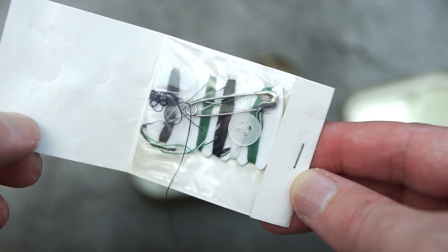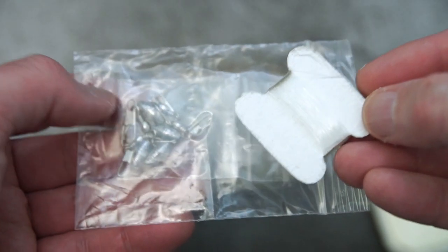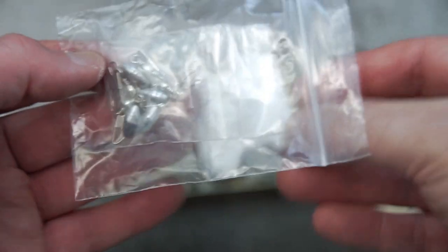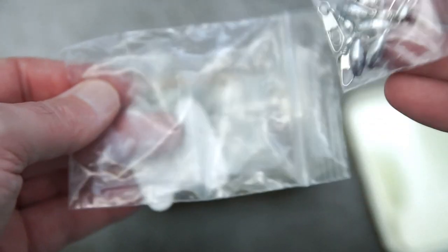Sewing kit's always useful to have for repairs or even making a makeshift shelter. Here's a little mini fishing kit with the line and you've also got some weights, hooks and swivels in the other bag.